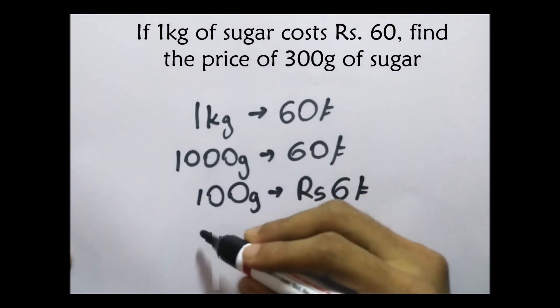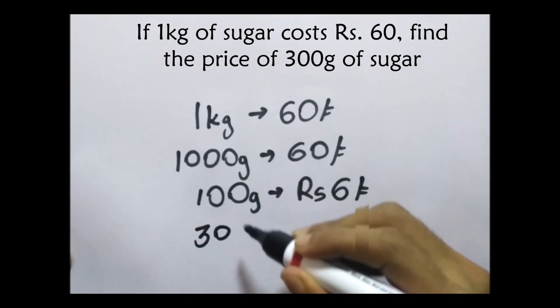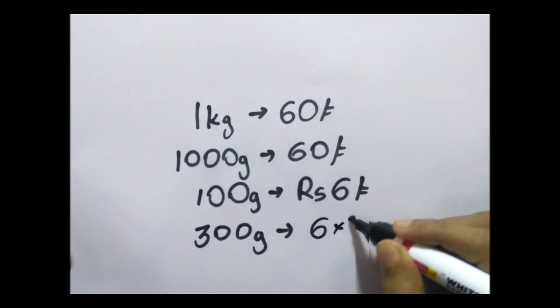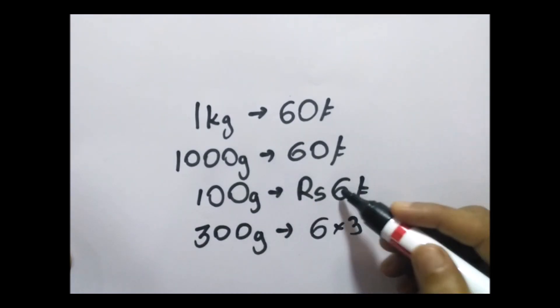Now we can find the final answer for 300 grams. We should multiply this 6 by 3 because 100 times 3 is 300, so 6 times 3 equals 18 rupees.